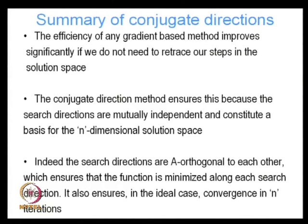We found that the search directions are A-orthogonal to each other, where A is some sort of metric in the solution space — a measure of distance — which defines the inner product and therefore the norm in the solution space. These search directions being A-orthogonal ensures that the function is minimized along each search direction. So, as soon as we ensure A-orthogonality, that automatically ensures minimization along the search directions. Furthermore, when we take subsequent steps, the error in a previously traversed search direction never increases.